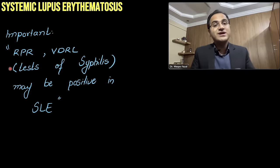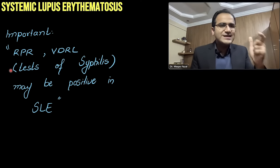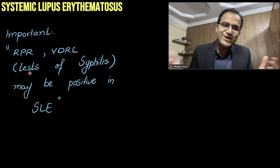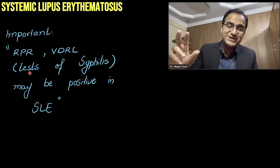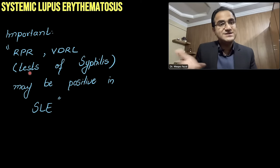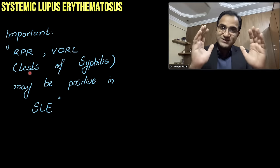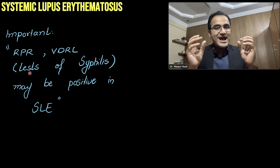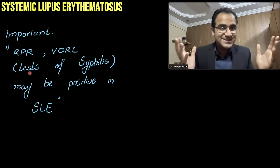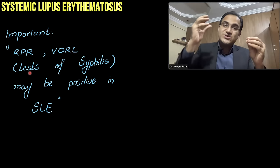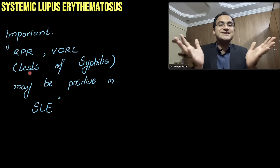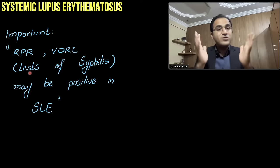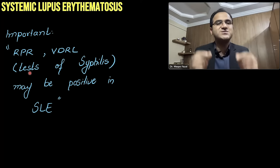An important point: if someone asks which test is falsely positive in SLE — the tests of syphilis (RPR and VDRL) are falsely positive in SLE. The patient will not have symptoms of syphilis, but RPR and VDRL will be positive because the antibodies against syphilis are similar to antibodies found in SLE. So RPR and VDRL are falsely positive in SLE; the patient is not having syphilis, but the tests are positive.